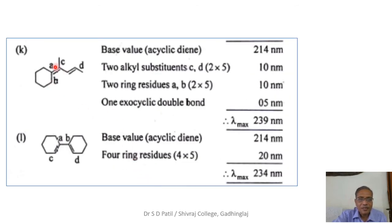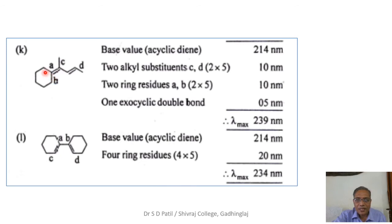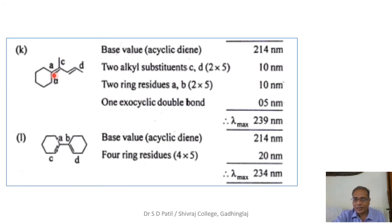In this structure, even though there is a ring present, the diene is not part of the ring — it is outside the ring. So the base value for acyclic diene is 214 nm. Substituents A and B on the conjugated system are ring residues, while C and D are alkyl substituents. Two alkyl substituents add 10 nm, two ring residues add 10 nm, and the double bond exocyclic to the ring adds 5 nm, giving a total of 239 nm.